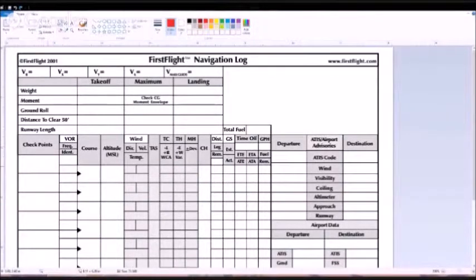Today we're going to be learning how to fill out our nav logs. Usually flight plans start and end greater than 50 miles, and your first checkpoint is going to be where you're taking off, which you put right here.